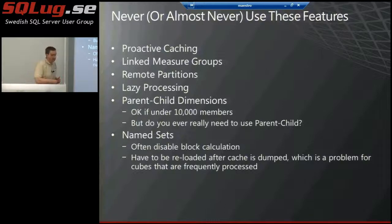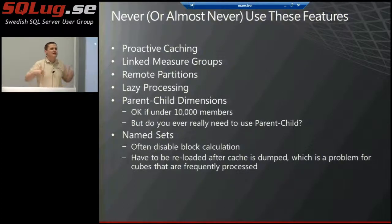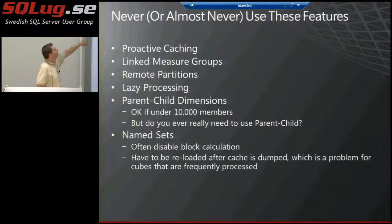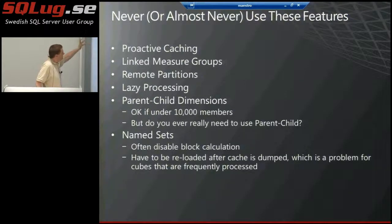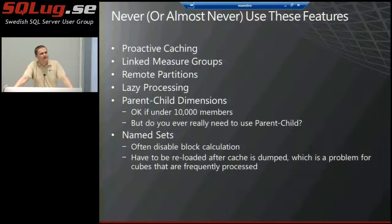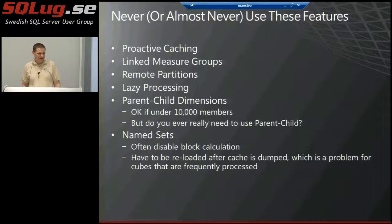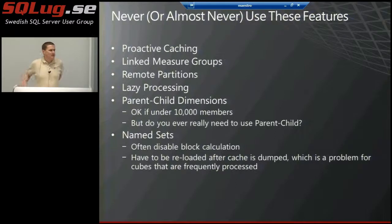They're hard to administer and they don't work very well with performance. What Microsoft recommends now is scaling out — if you need to spread over multiple servers, don't use linked measure groups, don't use remote partitions. They're there in the product, but they just don't work very well. Lazy processing is a way of getting processing done quicker — you finish up processing when the server has time. But the experience of the SQL CAT team is that a lot of users got in trouble with that. Much better to get the processing done and not use lazy processing.